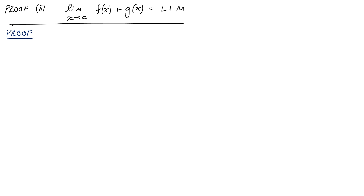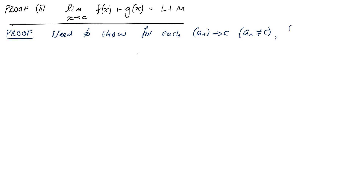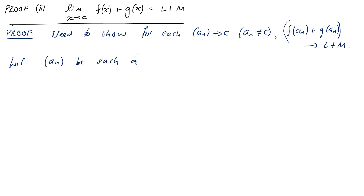Proof of property two. If we want to use the sequence characterization, then we need to show that for every sequence that converges to c — with the restriction that a_n is not equal to c, these are the types of sequences in our sequence definition — we need to show that the sequence f(a_n) plus g(a_n) converges to L plus M. To start our proof, let a_n be such a sequence.